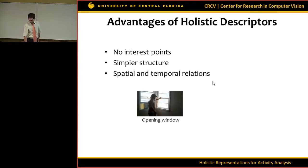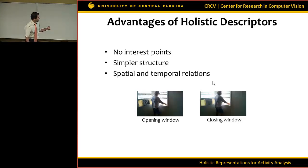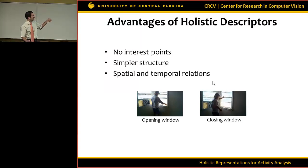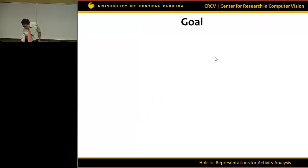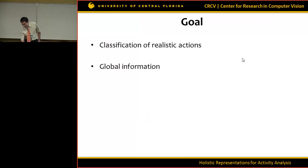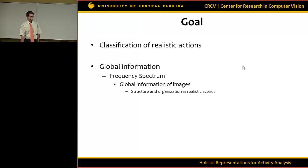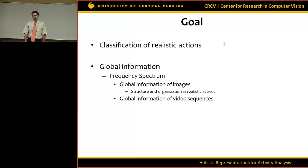Preserving temporal information is important. For example, opening a window and closing a window are just time-reversed versions of the same video. If your method cannot capture temporal information, it will think these two actions are the same, but they are different. Our goal is to classify a large number of realistic actions using global information. One way to capture global information is by using a frequency spectrum: for images, frequency components capture structure and organization, and similarly for video, analyzing the frequency spectrum may capture motion and scene information.